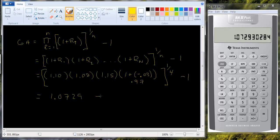and I'm going to subtract 1 from that, so I'm going to get 0.0729 or 7.29%. So you're going to get a slightly different number when you use the geometric return versus the arithmetic return.